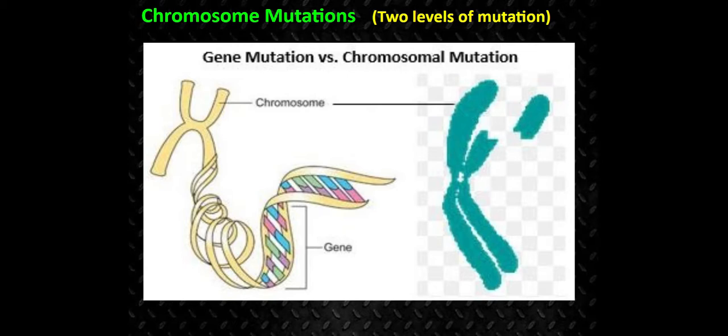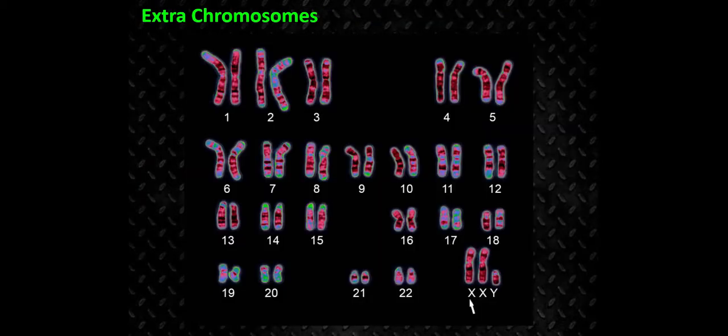You can see here in this picture they have a piece of chromosome that's broken up. Having extra chromosomes is one type of mutation. Humans have 23 pairs of chromosomes. If we look at the sex chromosomes — the very last set — you can see there's two X's and one Y. There should be either two X's or just an X and a Y.